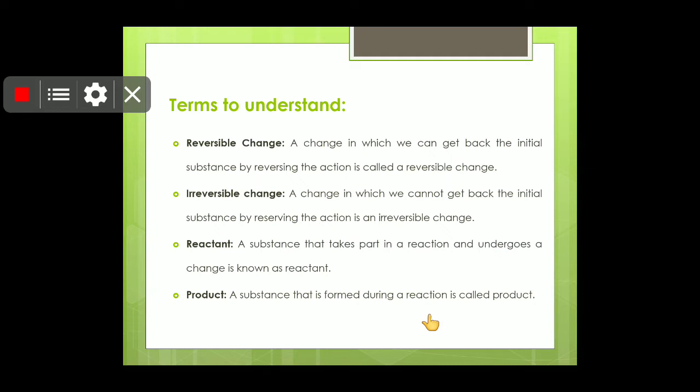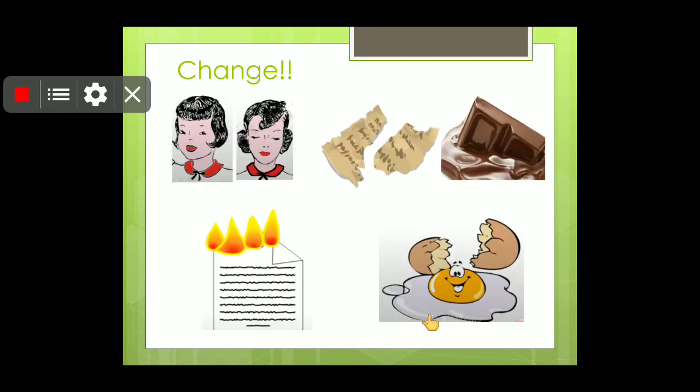And what we are getting out of the reaction by reacting the two or different chemical compounds is known as product. A substance that is formed during a reaction is called product. As the picture signifies, you can see that the little girl has got the haircut and the paper is being turned into tiny pieces and the chocolate is melted and the paper is burning.